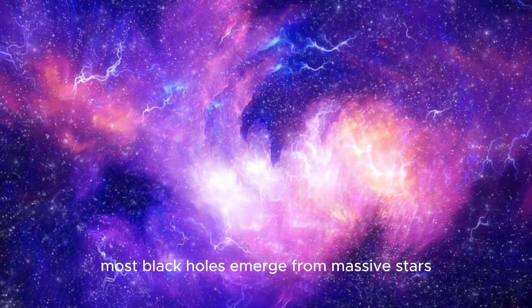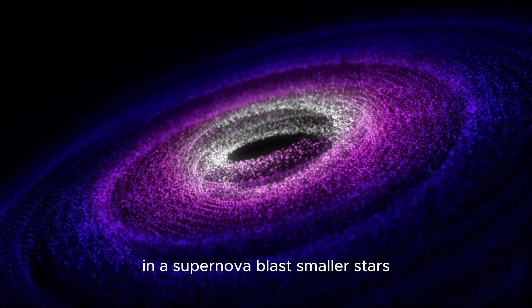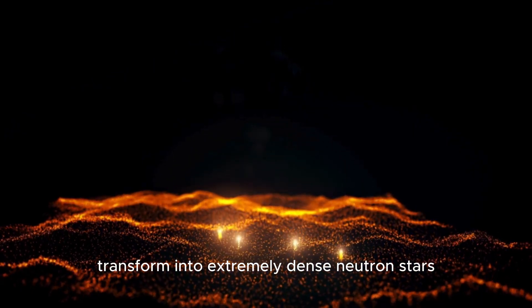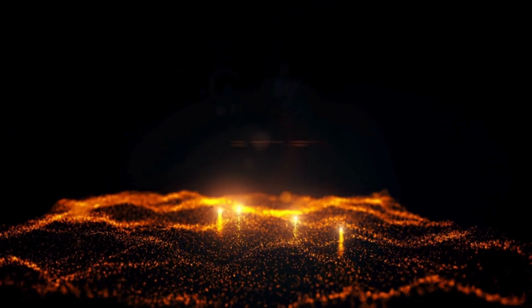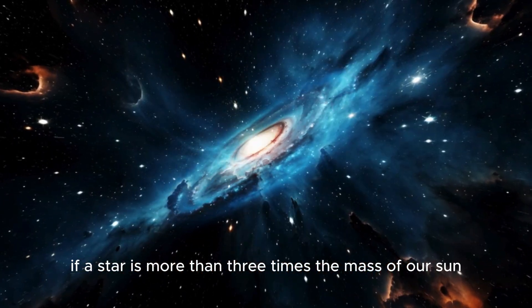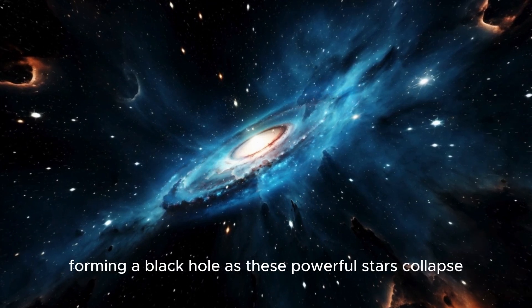Most black holes emerge from massive stars that have reached the end of their life cycle in a supernova blast. Smaller stars, upon death, transform into extremely dense neutron stars, but they're not quite dense enough to trap light. However, if a star is more than three times the mass of our sun, it collapses under its own gravity, forming a black hole.